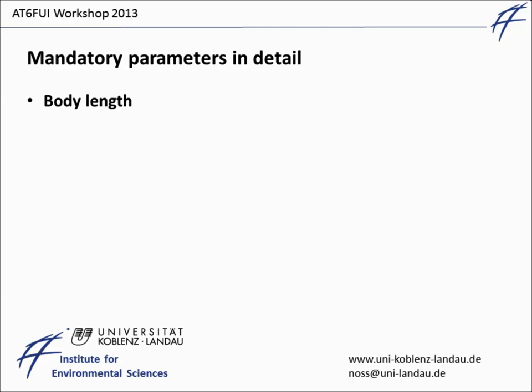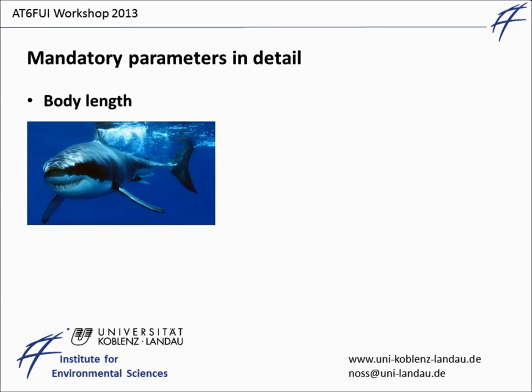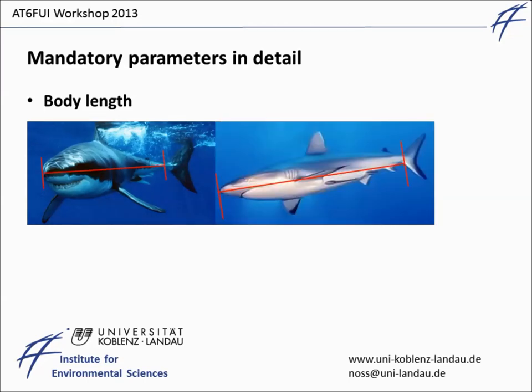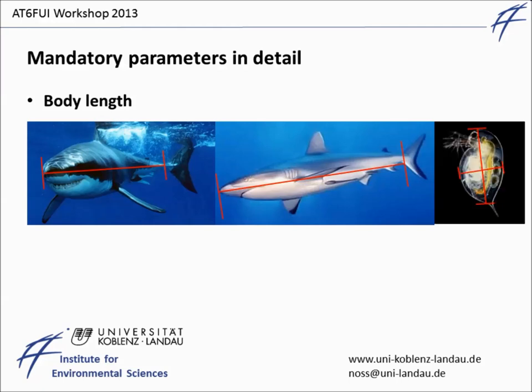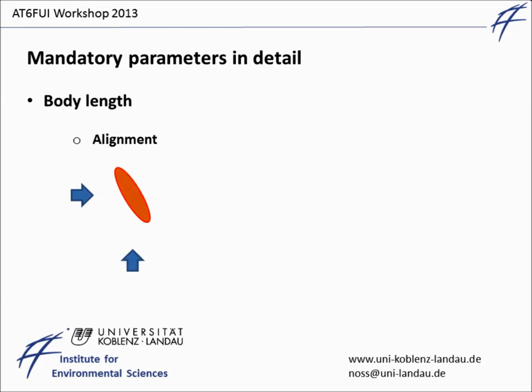Let me go into more detail on the mandatory parameters, starting with the simple body length. I assume you agree that this fish is somehow big, but I also assume you agree that this perspective is much better for the determination of body length. Although the aspect ratio of Daphnia is much smaller in comparison to that of sharks, one will introduce big mistakes if one disregards the alignment of the organism during its size determination. Hence it is strictly recommended to take the alignment into account, which requires at least two simultaneous observations from different perspectives, here denoted by the two blue arrows.